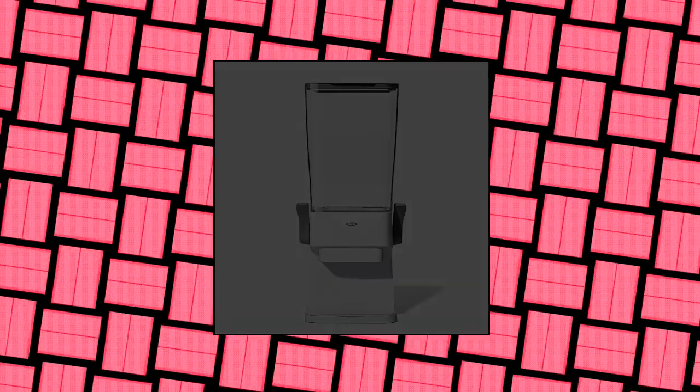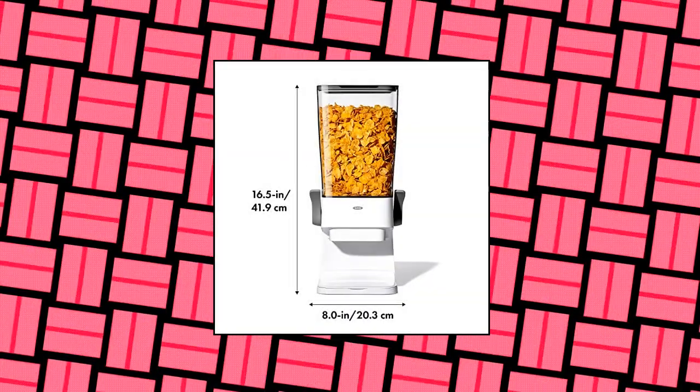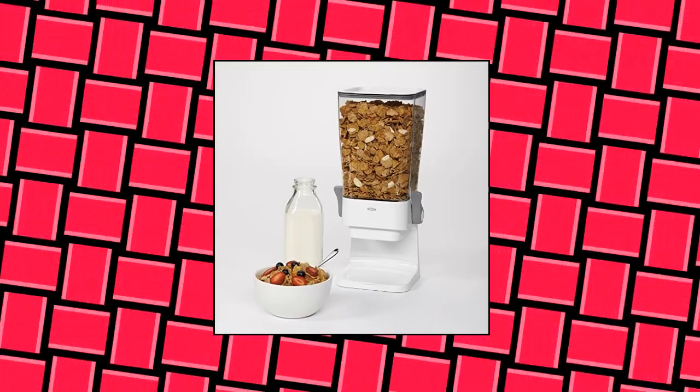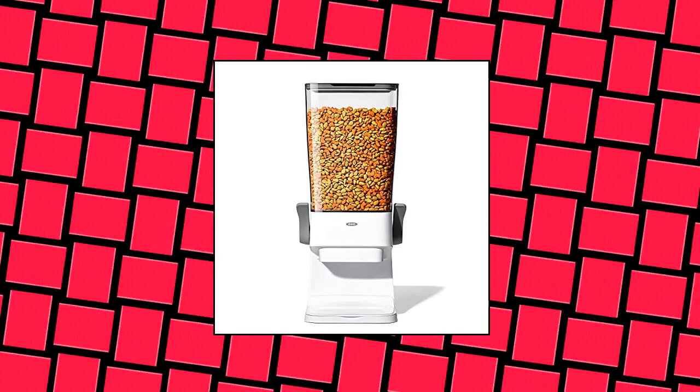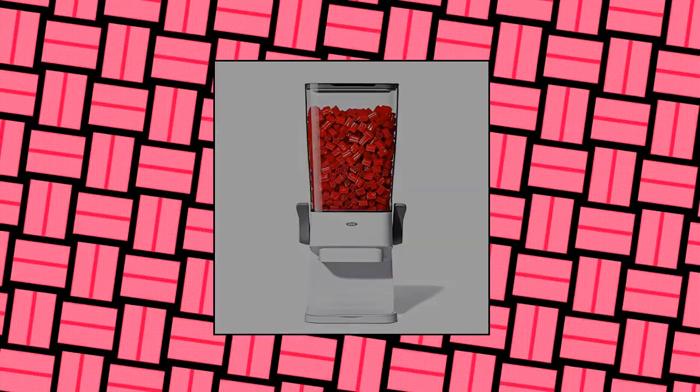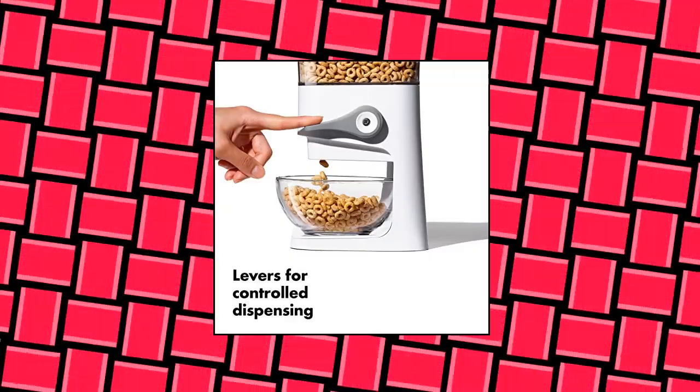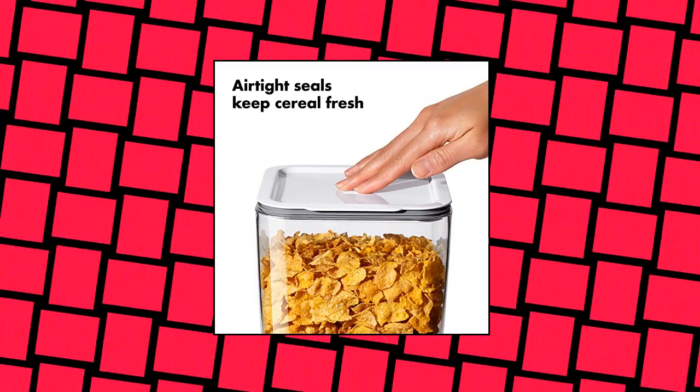OXO Good Grips Countertop Cereal Dispenser. Trap door opening designed to keep cereal whole while dispensing. Easy to use. Spring-loaded levers allow for easy, controlled dispensing. Canister lid features an airtight seal to keep cereal fresh. Tray catches crumbs to keep countertops clean and is removable for easy cleaning. Large-capacity canister can be removed for easy cleaning and locks into place. Levers are on either side.